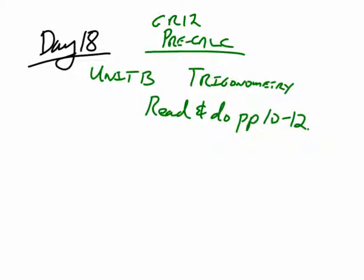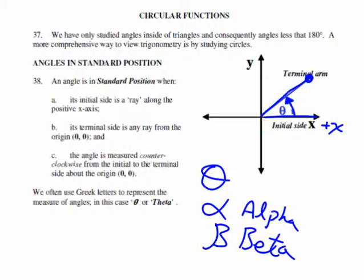Grade 12 Pre-Calculus Day 18 Unit B Trigonometry. Let's start by you reading pages 10 to 12. It's all actually word for word copied verbatim from the grade 11 stuff. So let's spend another hour or two just reviewing all of grade 11. Remember how to make angles.